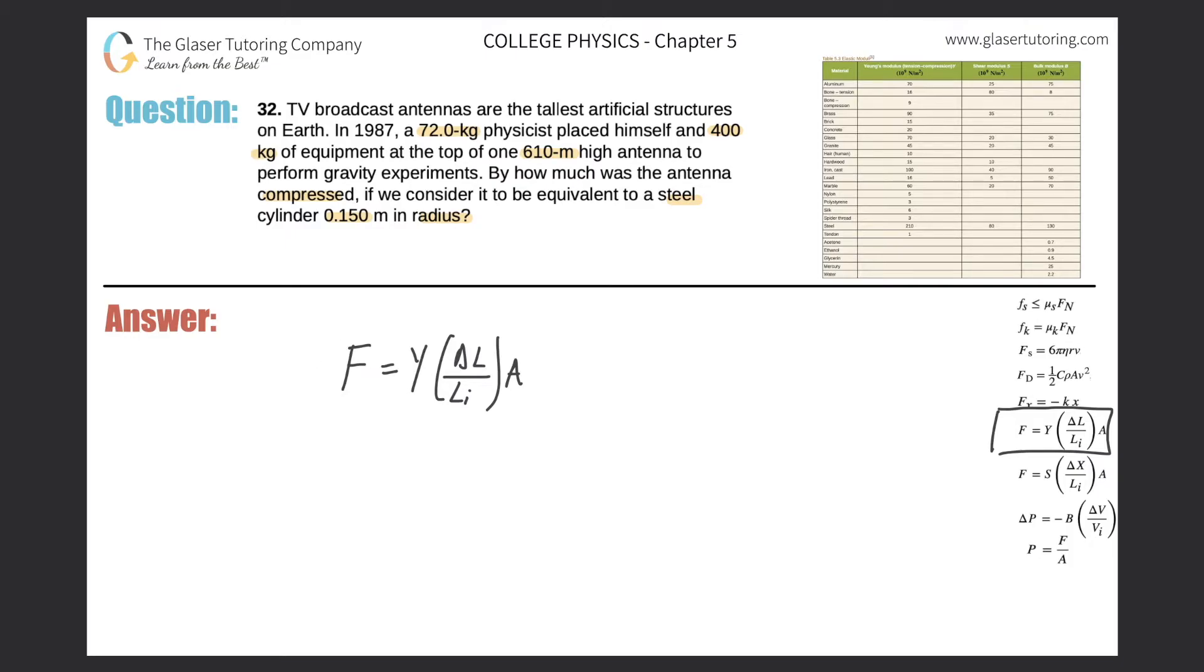So what's the force being applied to this antenna? It's simply found by the mass of the physicist and the mass of the equipment he placed. Remember that weight here is equal to mg. So the total weight of all the masses would simply be 72.0 plus 400 times gravity, 9.80.